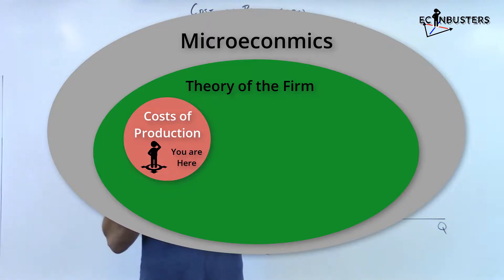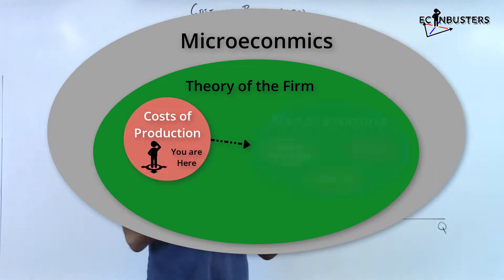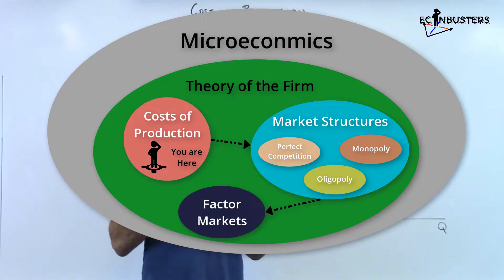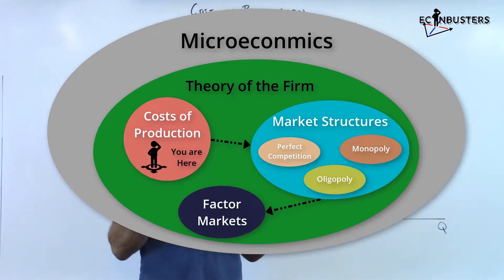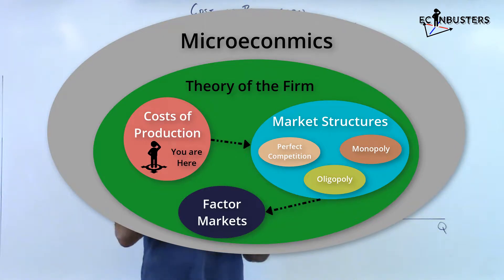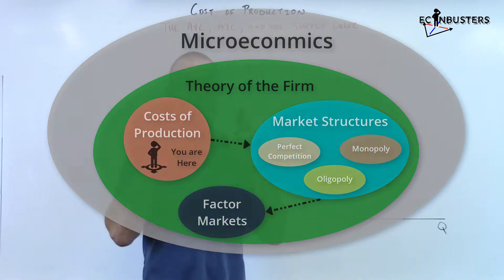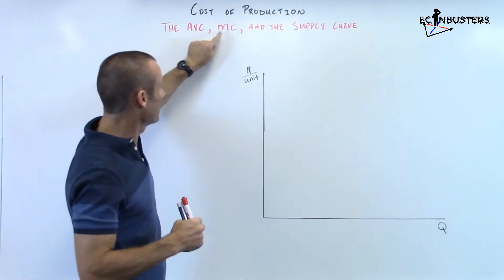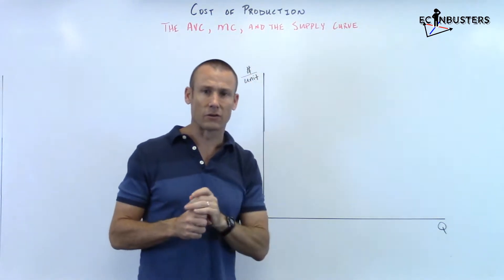It's the first unit because we really want you to understand cost of production well as we move into market structures — it's going to make things so much easier. If you stayed with us through all the cost of production videos, your foundation is very strong. We've got one more video to make it super strong, and here it is: AVC, MC, and the supply curve.